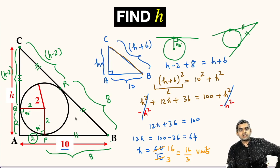The height H or the side AC of this triangle ABC will be 16 by 3 units.